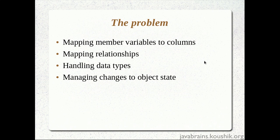The fourth pain point is managing changes to object state. Say I pull up user ID 123 from the database, create an object, and pass it to the business service. The business service makes changes — updates the email address or name. Now how do I manage this change? I will have to manually trigger an update query, frame the SQL query ourselves, and depending on what has changed, update the database to accommodate it. So these are common pain points we see in each and every application.